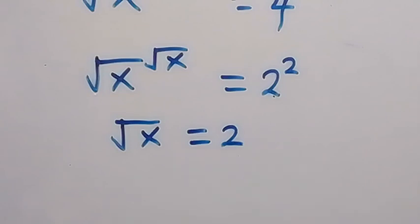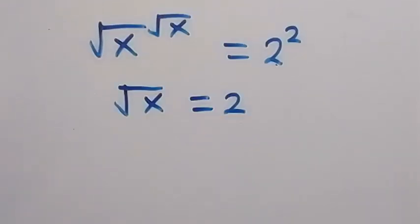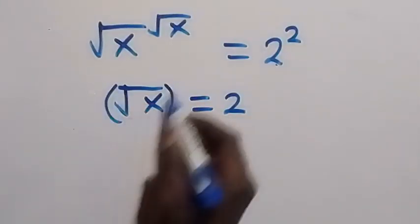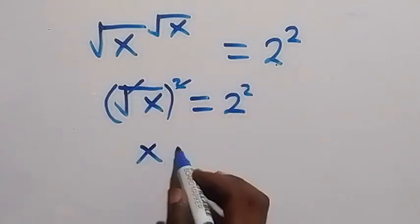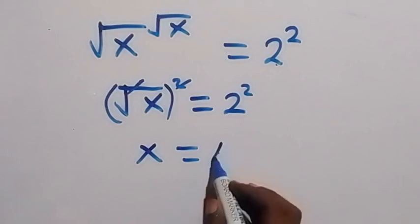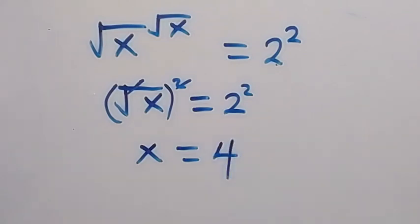Since you are finding x, you square both sides. Square this side, square this side. Square cancels square root here. We have x equals to 2 square, which is 2 times 2, which is 4. Therefore, the value of x in this problem is 4.